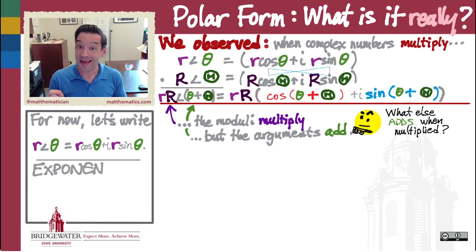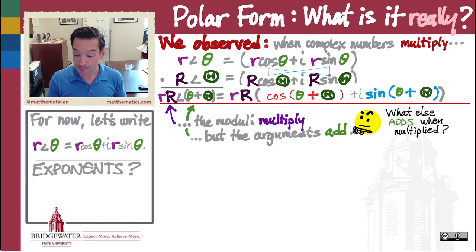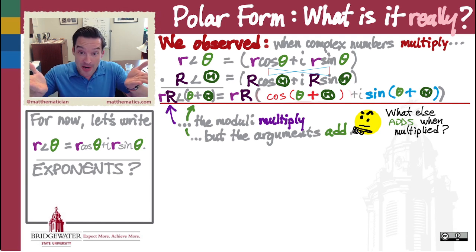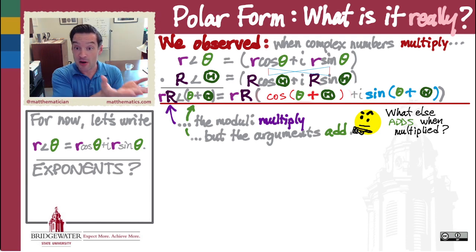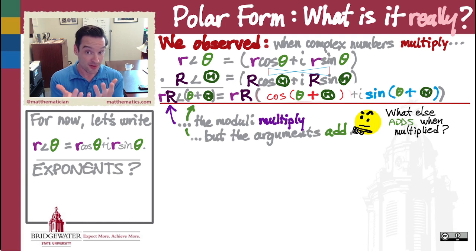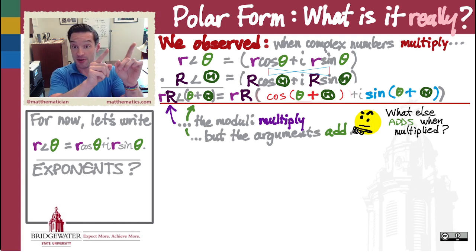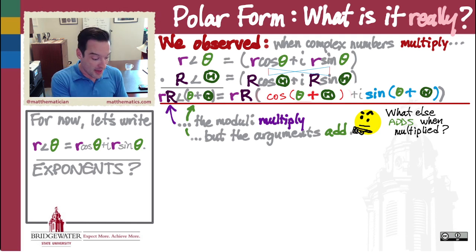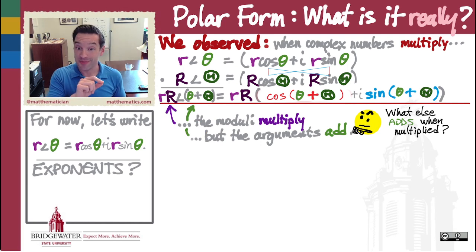The answer is exponents. When you're learning the properties of exponents in the high school curriculum, one of the first properties you learn is that if you multiply two exponentials with the same base, that base carries through but the exponents add. So multiplication of two powers with a common base leads to addition of their exponents. We might be led to surmise that the feature of complex numbers which adds together might be an exponent somehow.